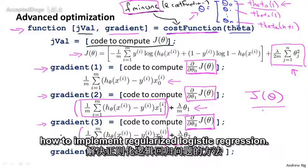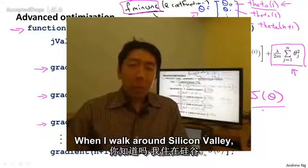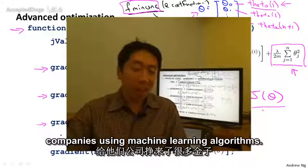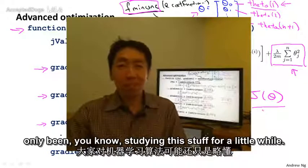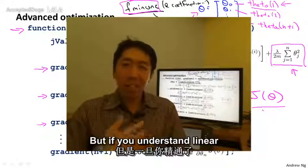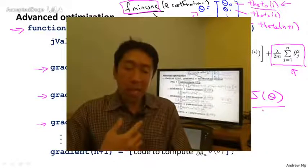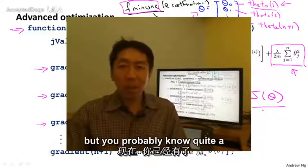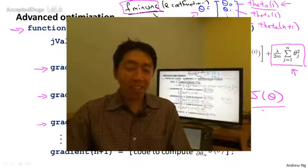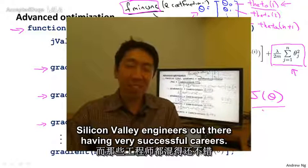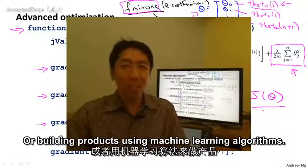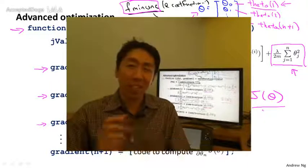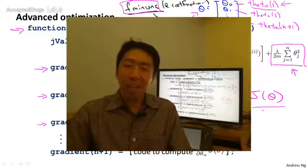So now you know how to implement regularized logistic regression. When I walk around Silicon Valley, I live here in Silicon Valley, there are a lot of engineers that are frankly making a ton of money for their companies using machine learning algorithms. And I know we've only been studying this stuff for a little while, but if you understand linear regression, logistic regression, the advanced optimization algorithms, and regularization, by now, frankly, you probably know quite a lot more machine learning than many, certainly not all, but you probably know quite a lot more machine learning right now than frankly many of the Silicon Valley engineers out there having very successful careers, making tons of money for their companies or building great products using machine learning algorithms. So congratulations, you've actually come a long ways, and you actually know enough to apply this stuff and get to work for many problems. So congratulations for that.